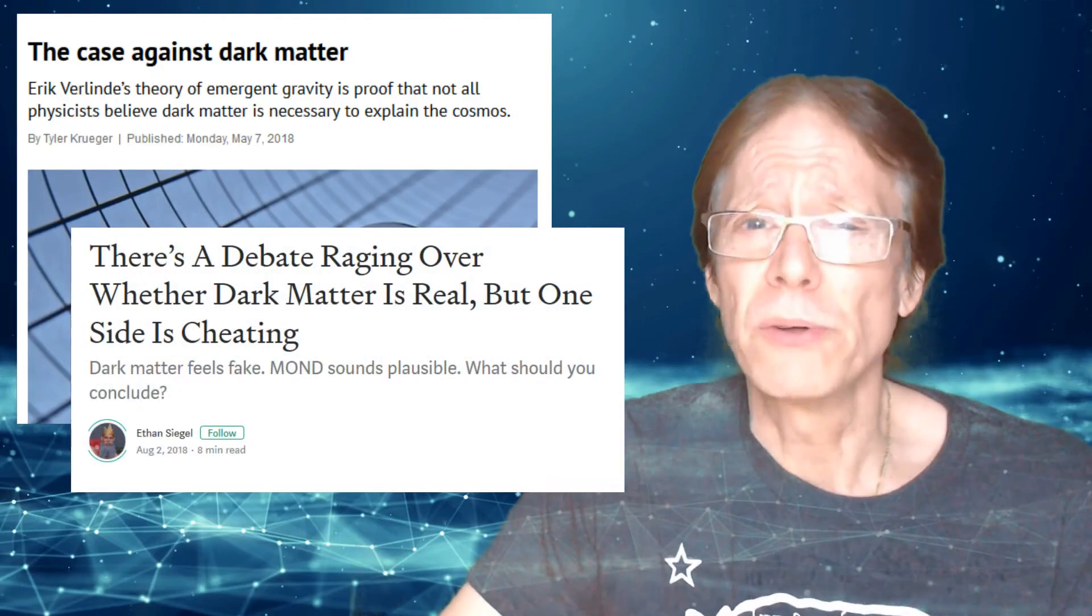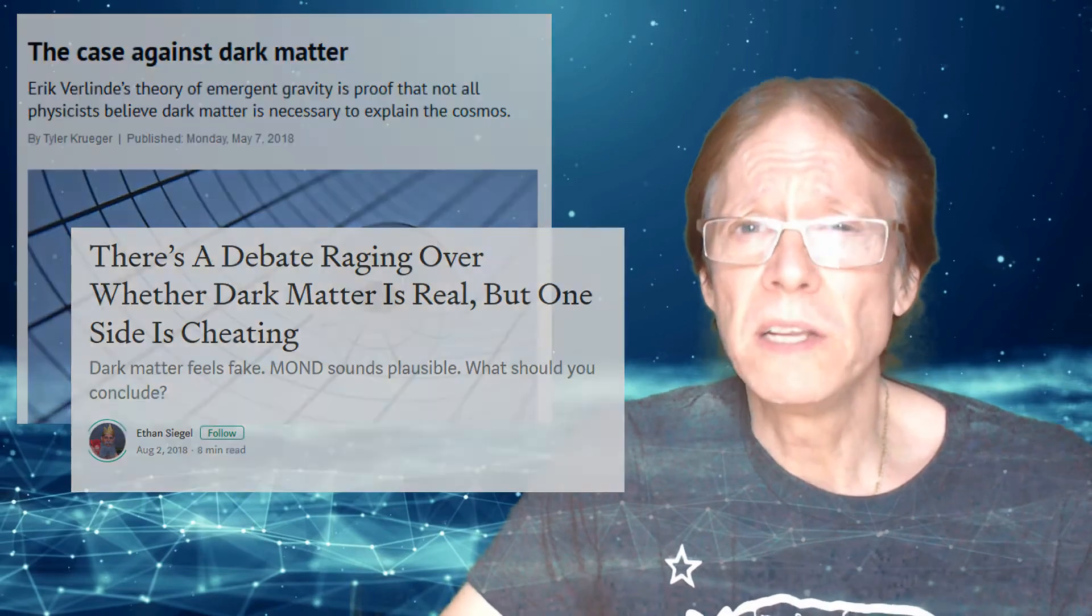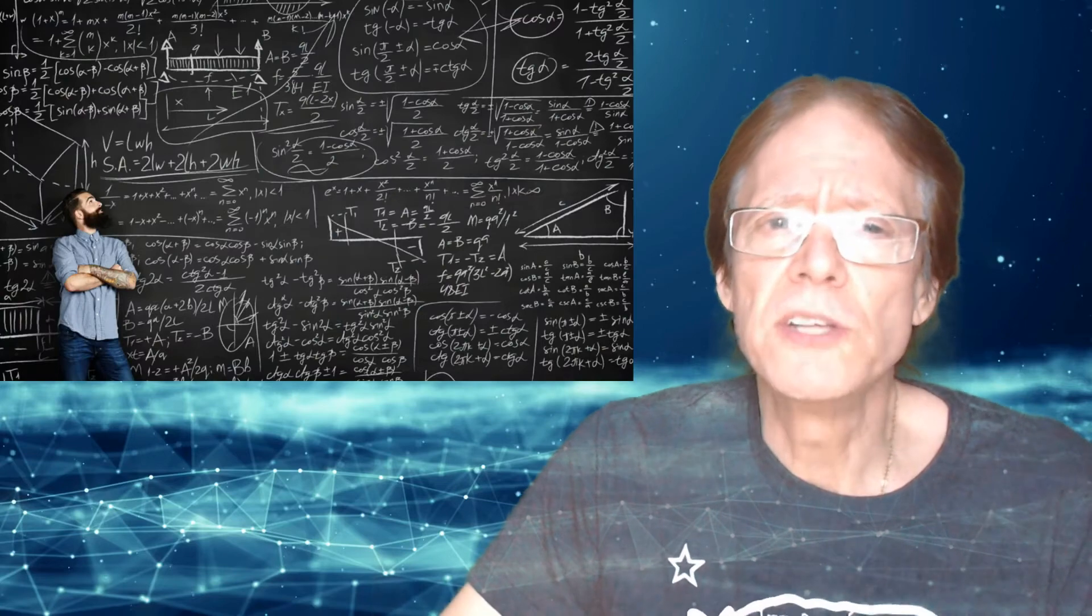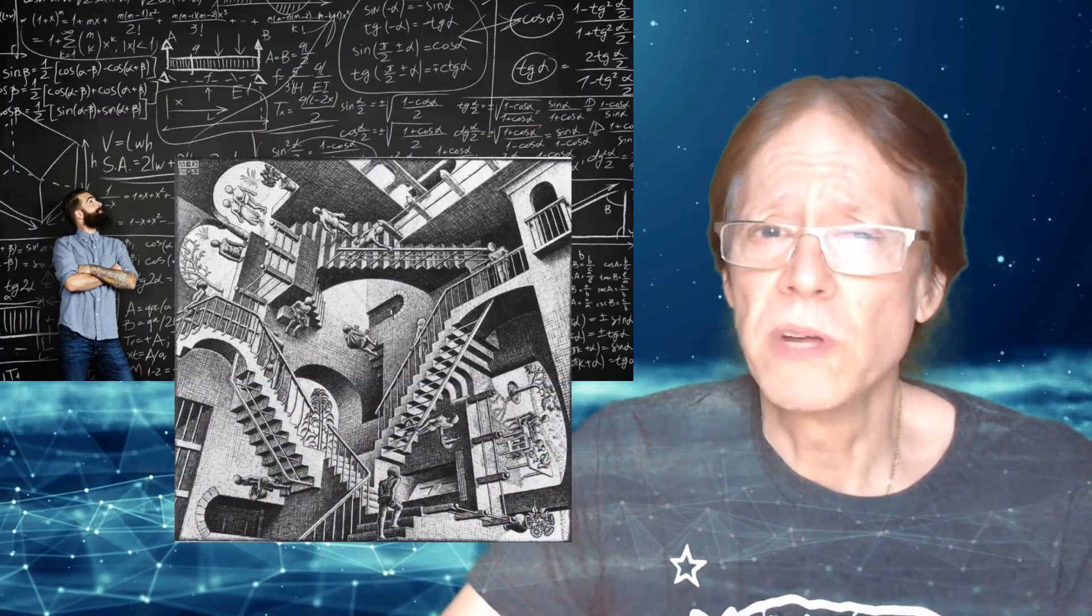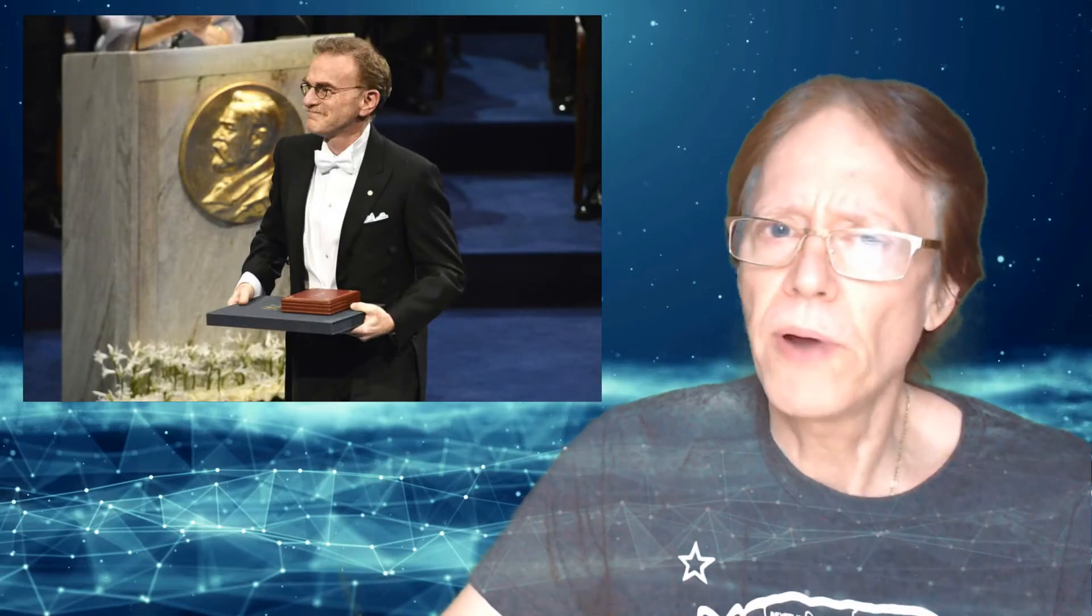A complicated universe brings a lot of advantages to egocentric mainstream scientists. It brings mystery and intrigue to science in a world full of entertainment and distractions competing for our attention. It brings the illusion of genius to those who claim to understand the nonsense of modern physics and cosmology. And finally, it allows for the egocentric scientists to get their funding and lucrative prize money from governments and prize organizations who are run by the very same scientists who perpetuate nonsensical science.